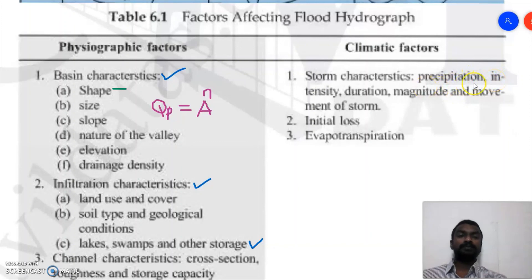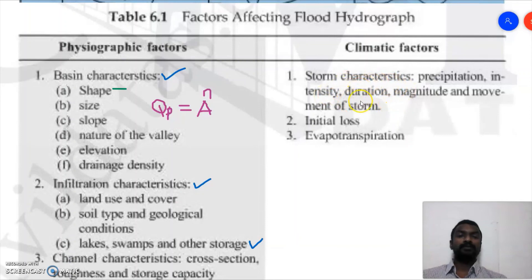If the intensity of rainfall is greater than the infiltration loss or initial loss, runoff is generated in less time and it directly impacts the peak of the hydrograph. Duration refers to how long the rainfall lasts, and magnitude represents the quantity shown as peak discharge. Storm movement direction is also critical: if the storm moves from upstream towards downstream towards the outlet, quick discharge is achieved.